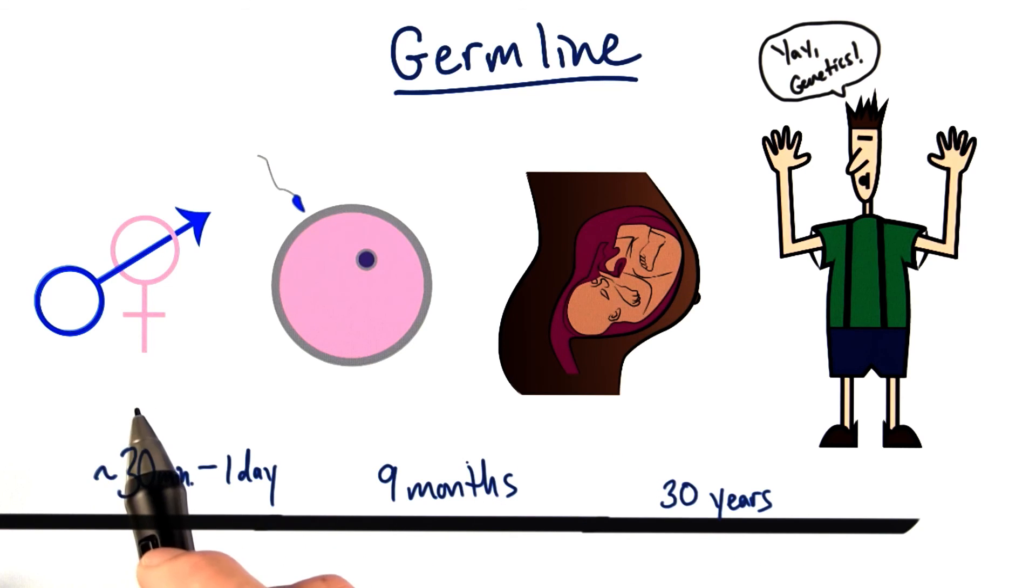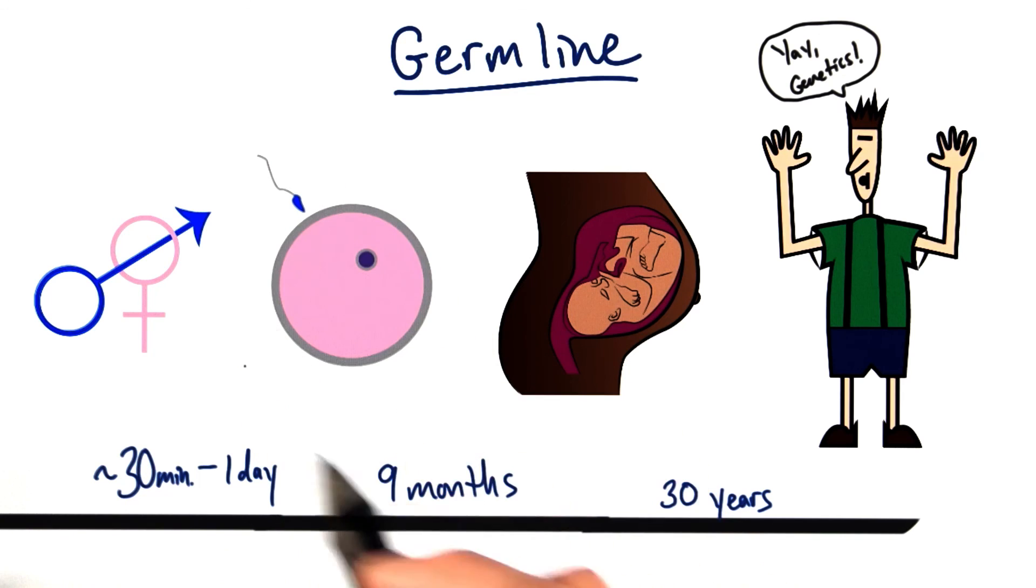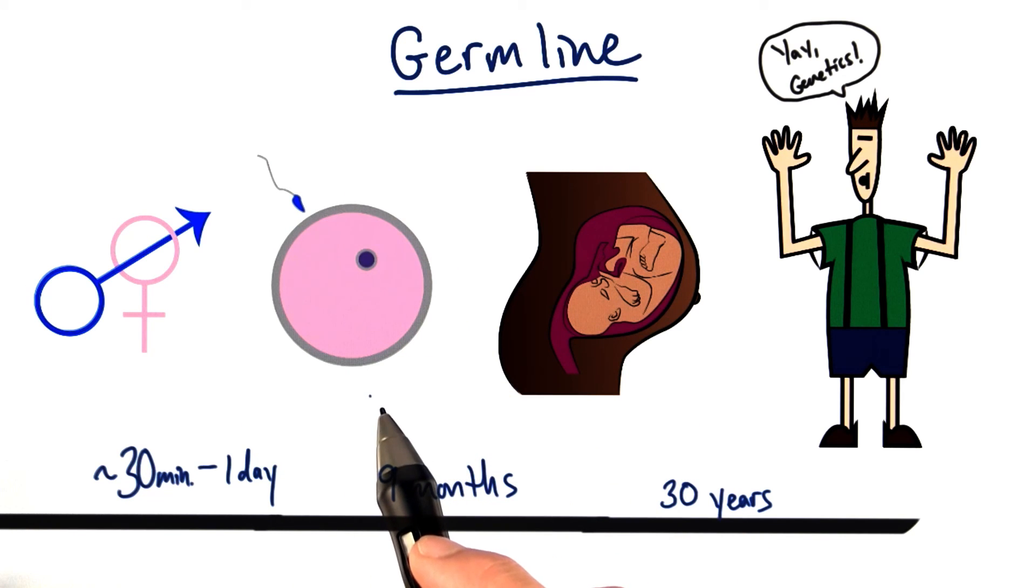My parents must have found each other and exchanged sex cells. They must have had a successful fertilization of these sex cells. And I must have had a successful development in utero, or growing in my mother's womb.